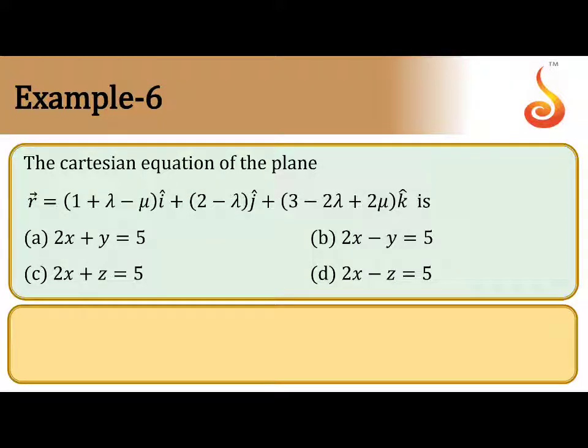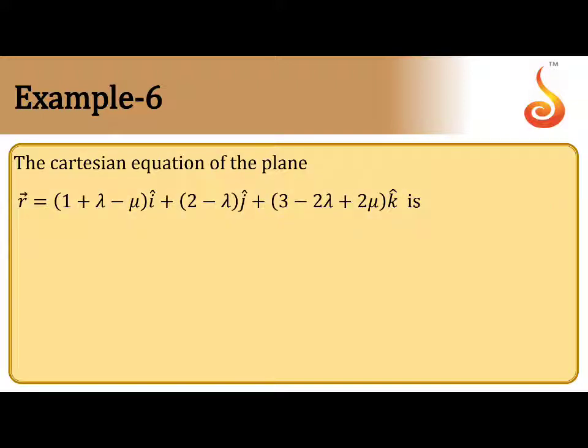The equation of a plane is given as r̄ = (1 + λ - μ)i + (2 - λ)j + (3 - 2λ + 2μ)k. They are asking for the Cartesian equation from this vector equation. Let us see how to calculate the Cartesian equation of the given vector equation.